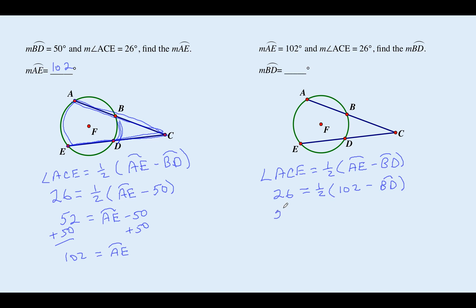Next problem, times both sides by two. Here's where it gets a little tricky. Subtract 102 so they cancel. That's negative 50 equals negative arc BD. Divide both sides by negative one. Get rid of that. And you get 50 is equal to arc BD.